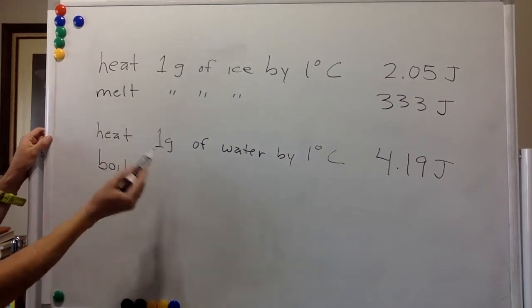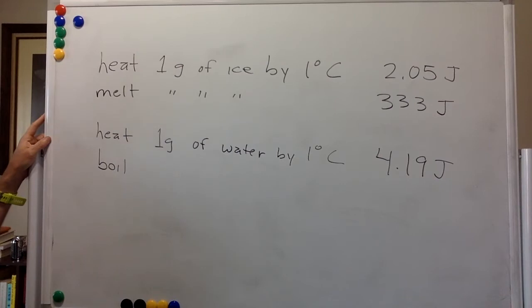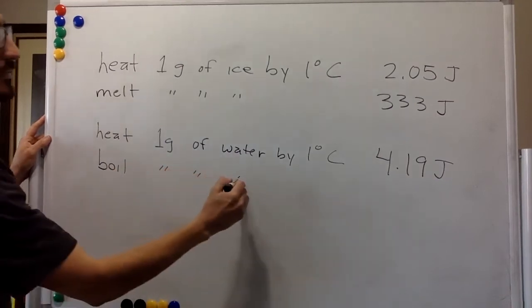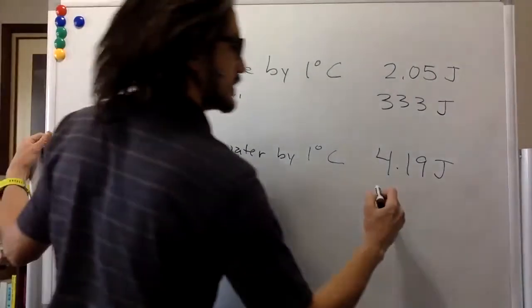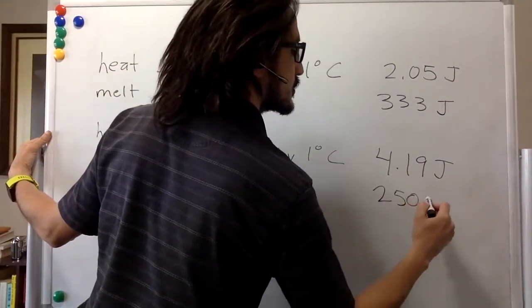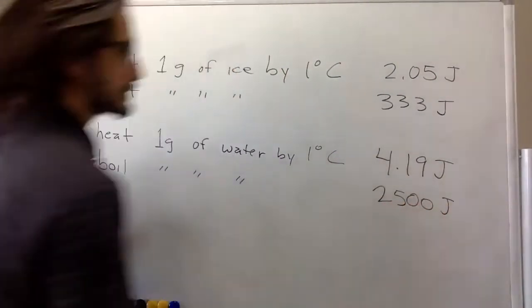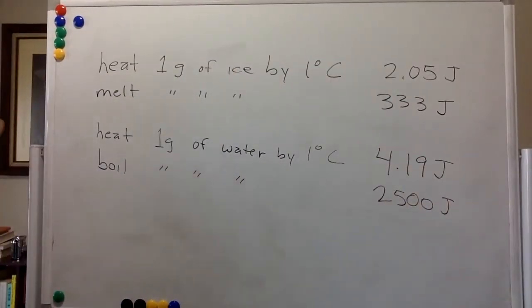And to boil one gram of liquid water will be 2500 joules. You require a lot of energy to boil water. Water, in general, is a material that can contain a lot of heat.